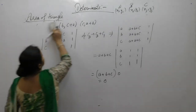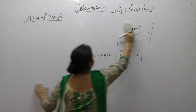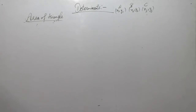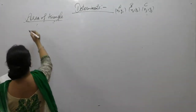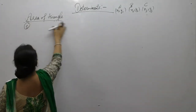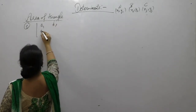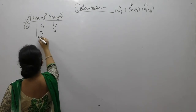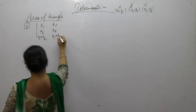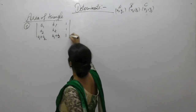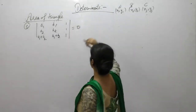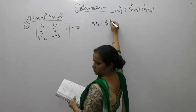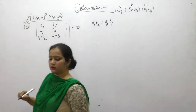Now the next one. If the points (a1, b1), (a2, b2), (a1, b2) are collinear, then show that a1·b2 equals a2·b1. If these are collinear, then area equals 0. Operate R2 as R2 minus R1, and R3 as R3 minus R1.